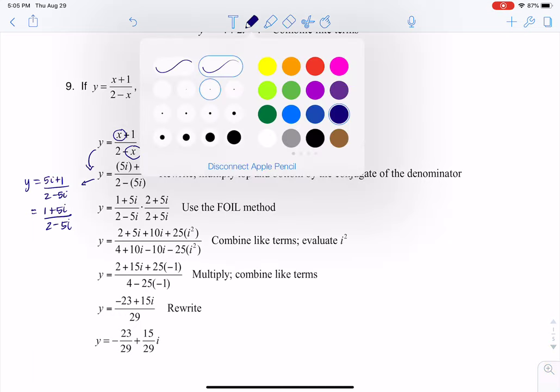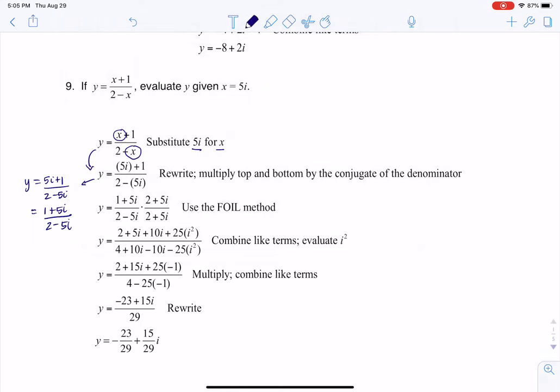So the thing with having i's in the denominator, there's a rule in math that you can't have a square root in a denominator. And just to recap where we are, y equals 1 plus 5i over 2 minus 5i. But if you remember, i is the square root of negative 1. So technically, I have a radical in my denominator, and math folks freak out about that. So let me write radical in denominator, which is bad news bears.